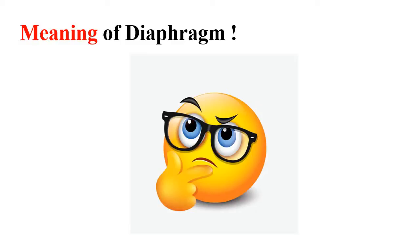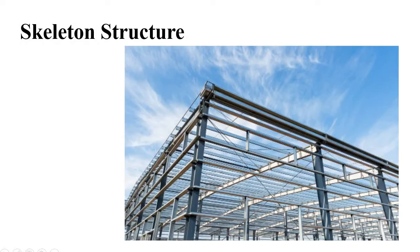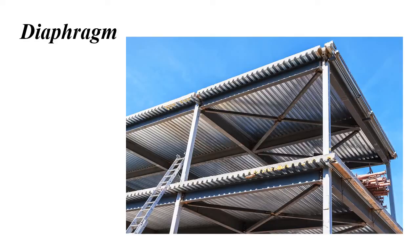If you are a beginner, the question arises: what do you mean by a diaphragm? The simple answer is that if you have ever seen any steel structure, you know you have some columns, some rafters, side rails, purlins, and bracing. If you call all these components as a whole, you can call this the steel skeleton. Once you put some sheeting at the roof, you can call this roof a diaphragm instead of a skeleton structure.